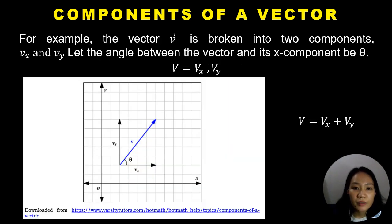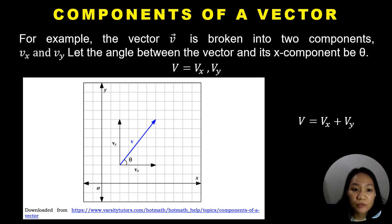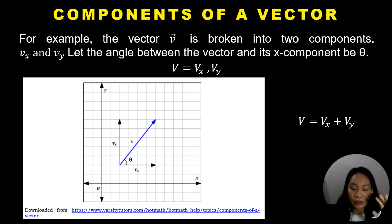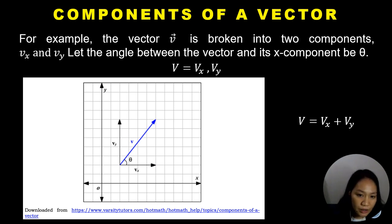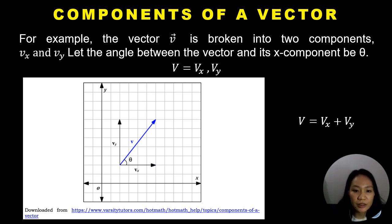The vector b on the screen, the blue arrow, is broken into components d sub x and d sub y. If you look at this vector, you'll notice that it is placed in the x and y coordinate plane, and vector b creates an angle with respect to the horizontal, as you can see from theta in the figure.